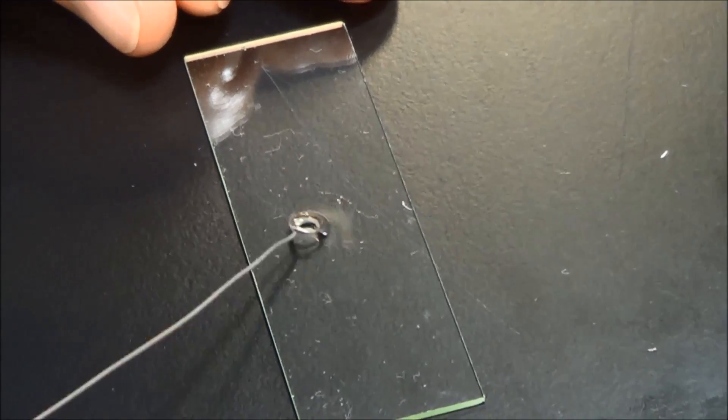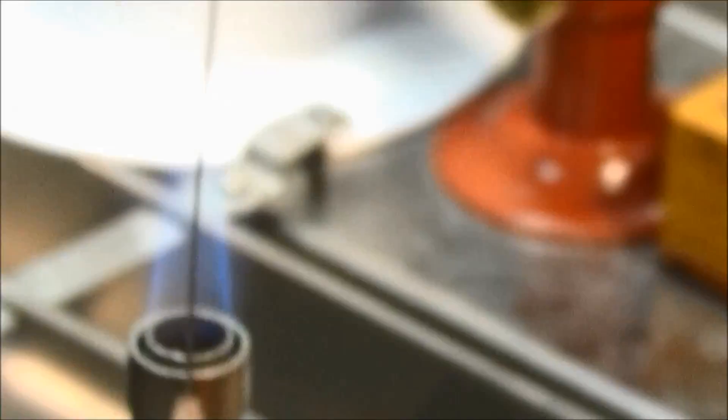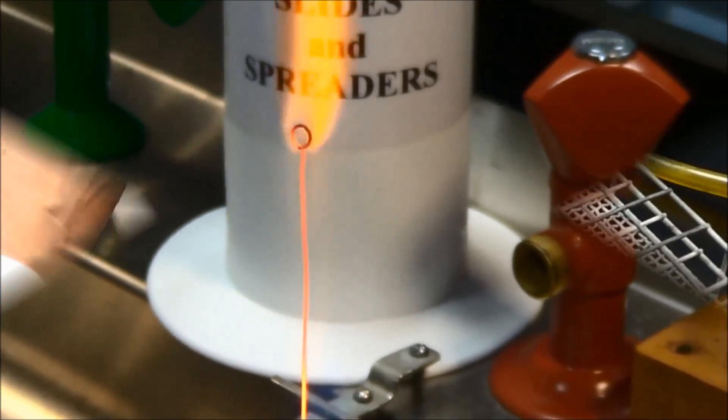A cell suspension that is too dense will make it difficult to examine the cells. Re-sterilize the loop.